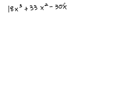Always check to see if all three terms have something in common. In this case, they do. 18, 33, and 30 are all divisible by 3. They also all have a variable x in common.